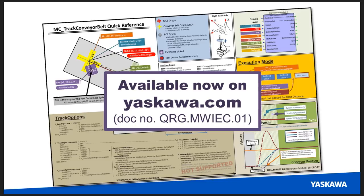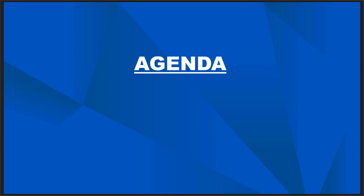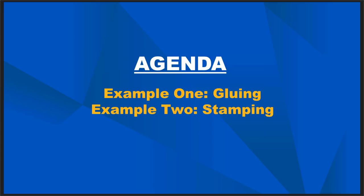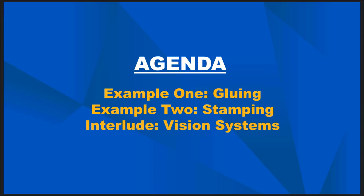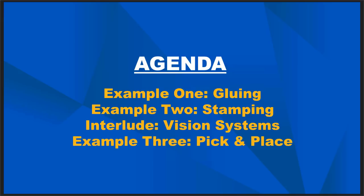Today, as opposed to the introduction, we're going to talk about actual practical applications and code that you would see when using conveyor tracking. We're going to start with a simple application and work our way to more difficult ones: first a single axis gluing application, then a z-axis stamping application, then an interlude on vision systems, and finally a pick-and-place application.